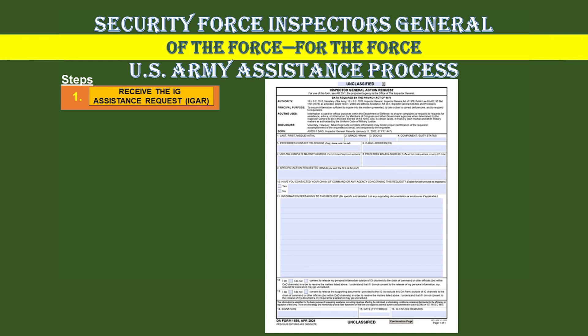Inspectors General provide and use the Department of the Army Form 1559, Inspector General Action Request, as the primary intake document to record complaints and requests for information. This form explains the Privacy Act and the consent elections that pertain to the release of personal information and supporting documents outside of IG channels but within DOD channels. Complainants should submit their complaint using the DA Form 1559 in order to capture contact information, the specific action requested, key information pertaining to the request, and the complainant's consent elections. A copy of the 1559 is in the toolbox in both DVD number one and this DVD.